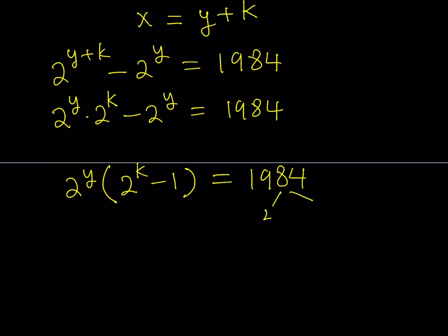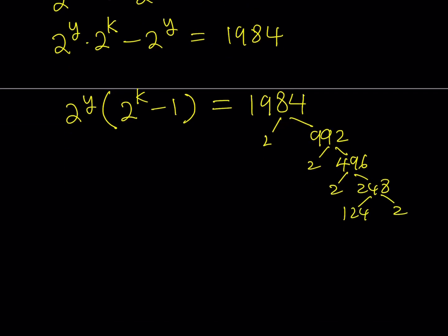You know, I can write it as 2 times 992. And then 992 is basically 2 times 496. And 496 is 2 times 248. And 248 is 124 times 2. And notice that 124 can be written as 4 times 31. And 4 can be written as 2 times 2. So, we did the factor tree here. Notice that we have a lot of 2s in the prime factorization. Of course, 31 is also prime.